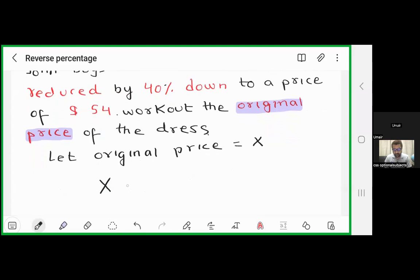We have to subtract 40 percent of this price, meaning 40 percent of x will be subtracted from x. x is original price and this is 40 percent of original price. So reducing 40 percent from original price I will get my new price for the dress which is $54.